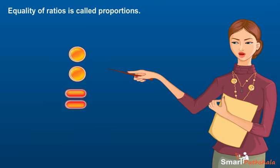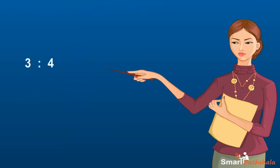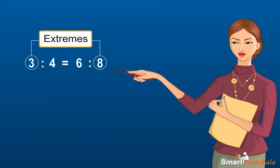If 3 is to 4 is equal to 6 is to 8, then the proportion is expressed as shown here. Now the terms that are in extreme right and left are called extremes. Here 3 and 8 are extremes. The terms that occur in the middle are called means. Here 4 and 6 are means.